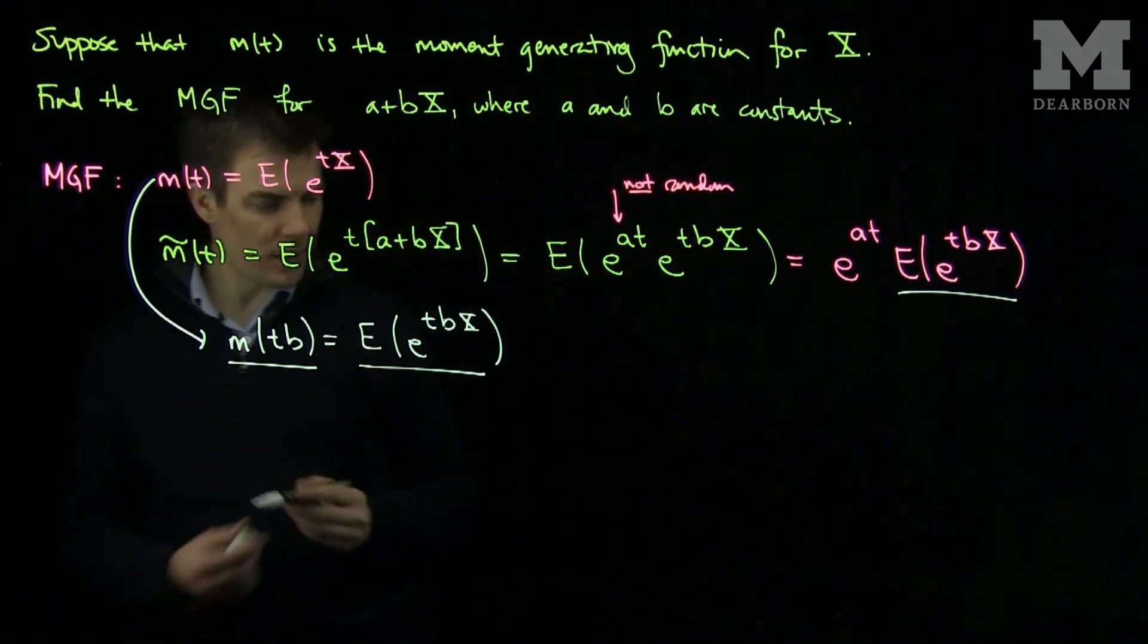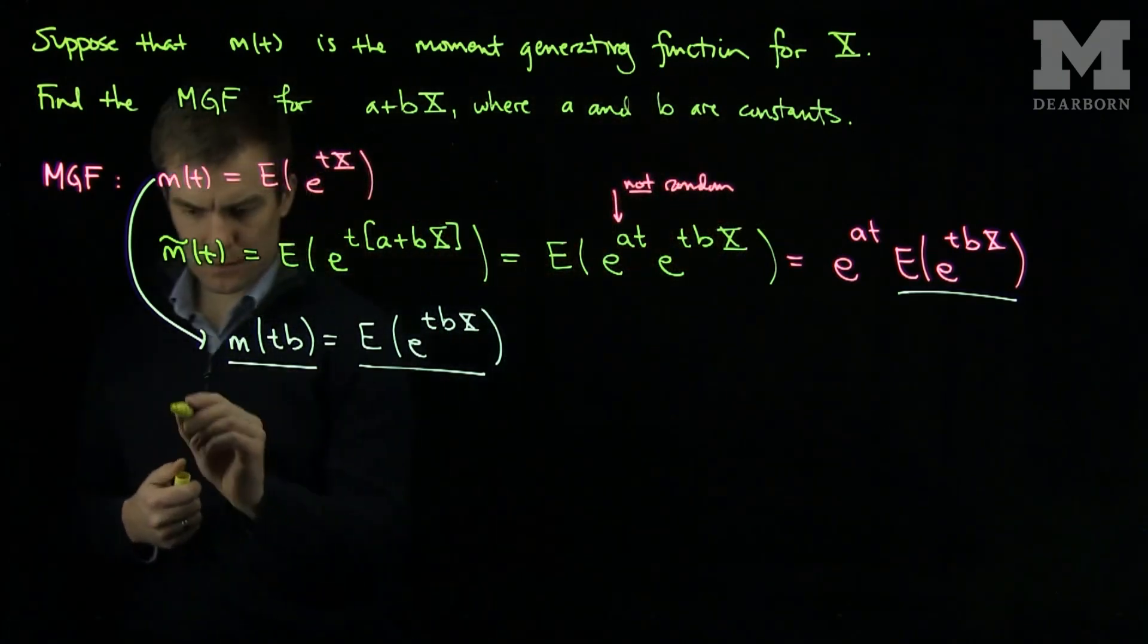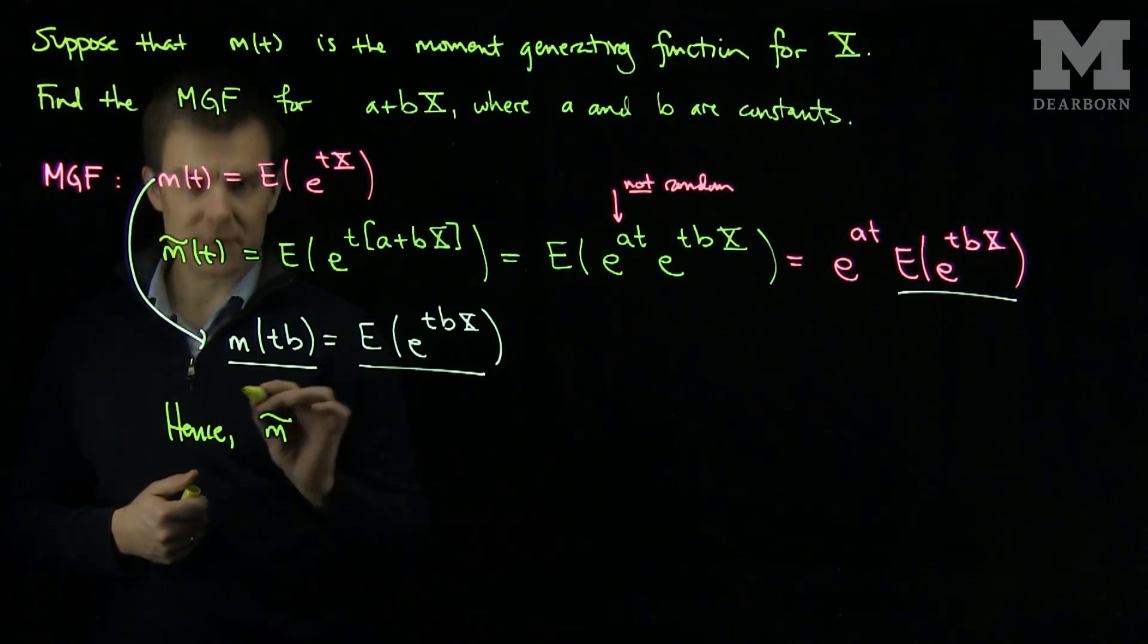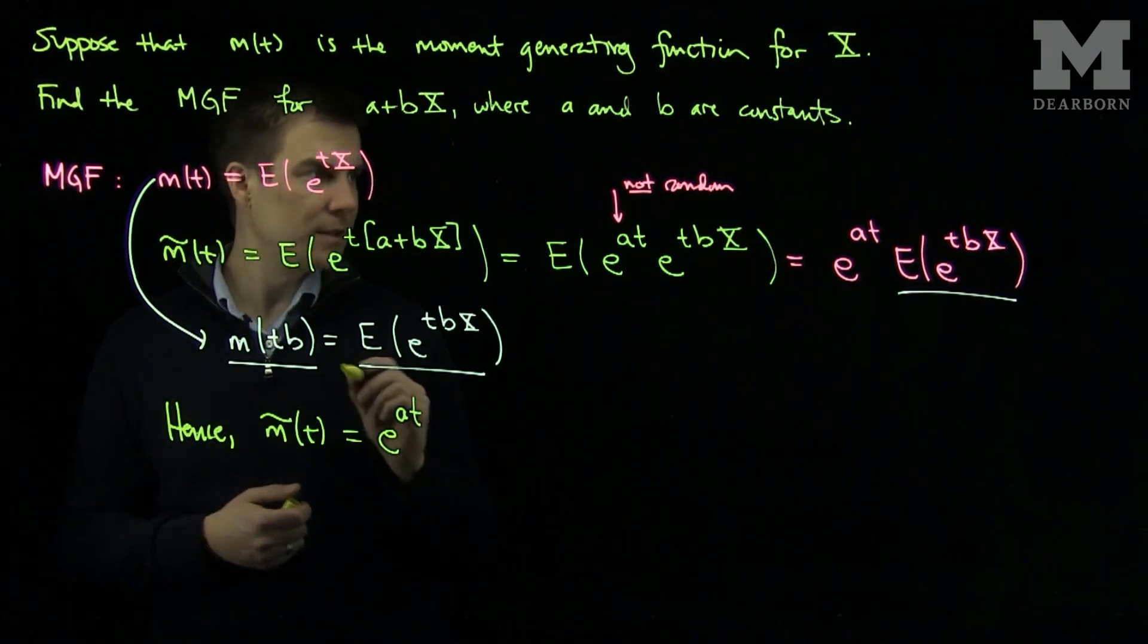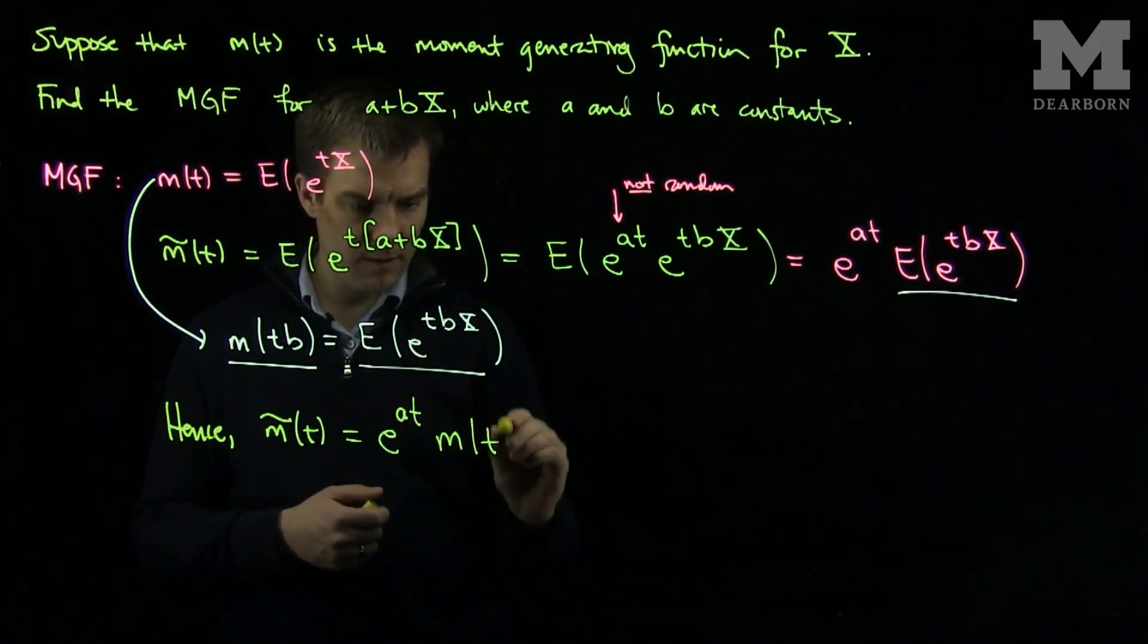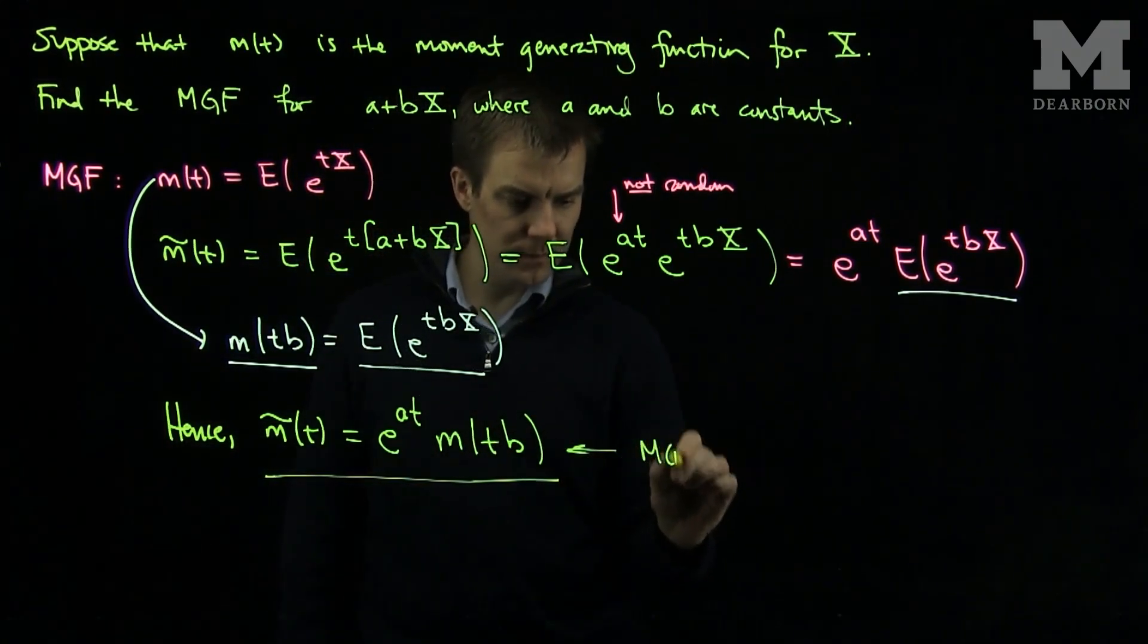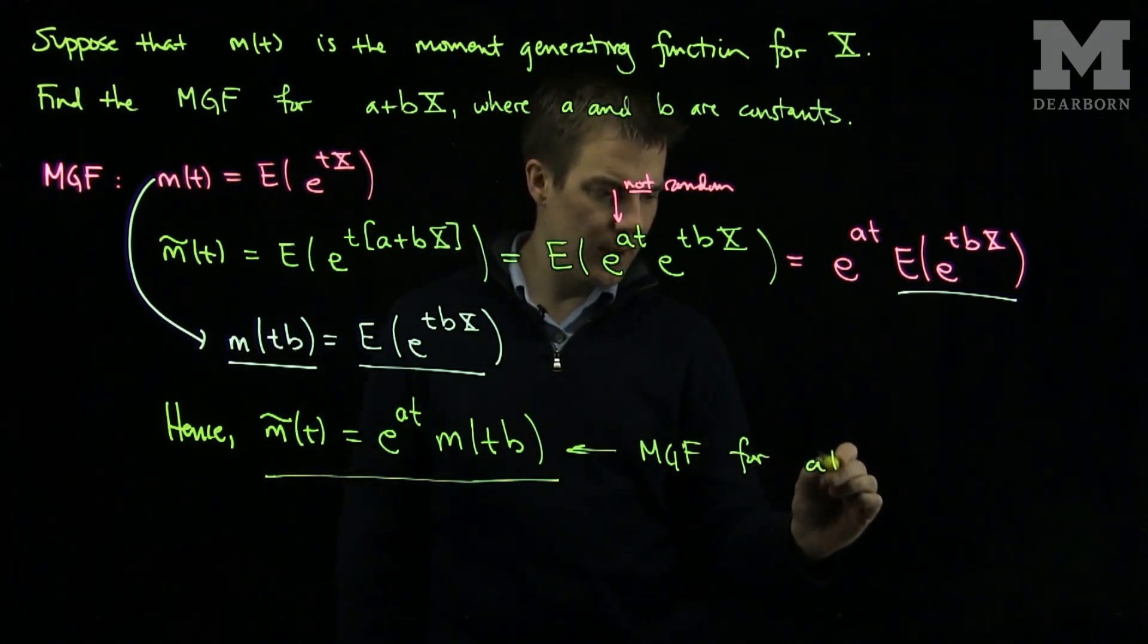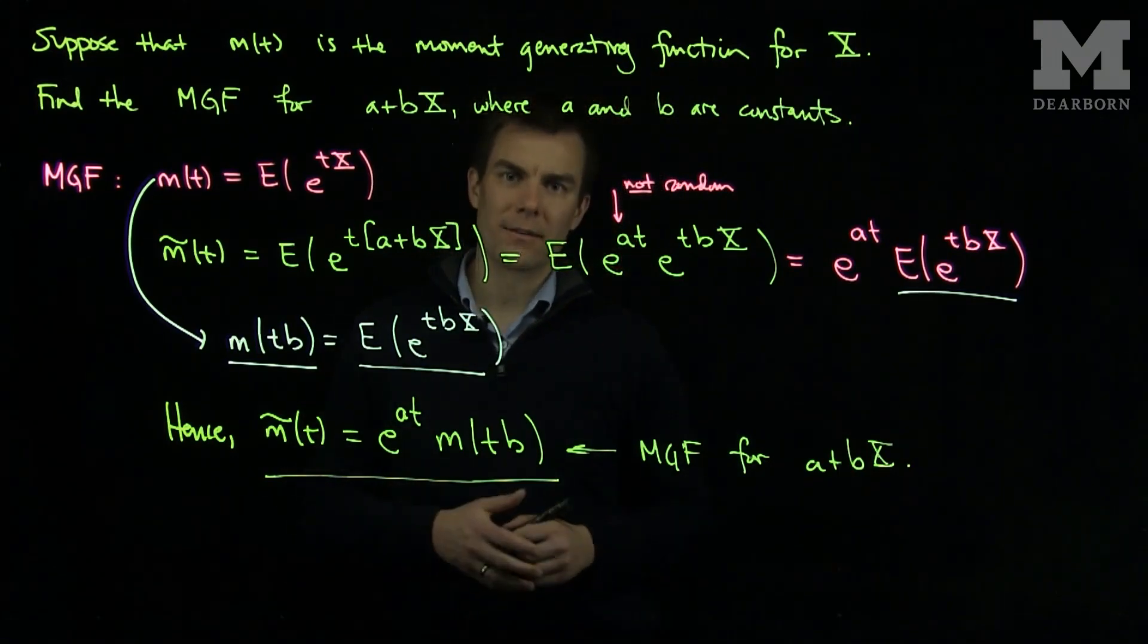Therefore, we can conclude that m tilde of t is e to the at times m of tb. And so this is the moment generating function for a plus bX. Thank you very much.